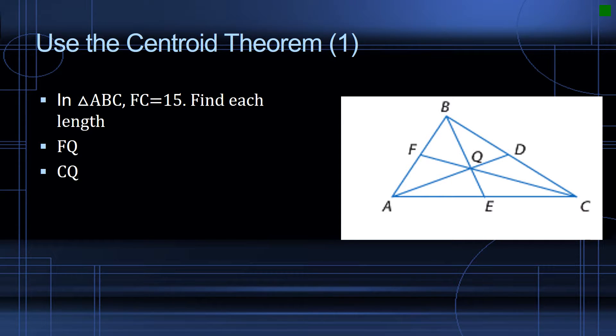In triangle ABC, we can see triangle ABC. Line segment FC, so here is F, here is C, this line segment from the vertex of C to the midpoint of the side opposite C, has a measurement of 15, and we don't know what unit of measurement they're using, but it doesn't matter. We're asked to find the length of FQ and CQ.